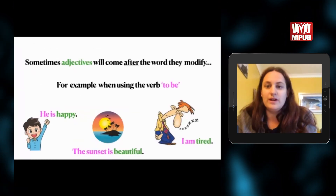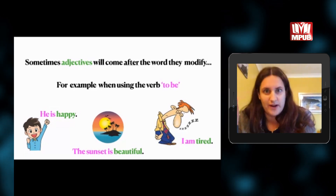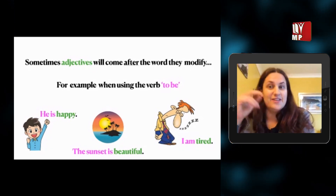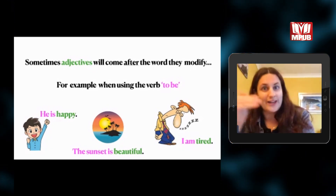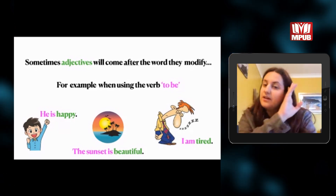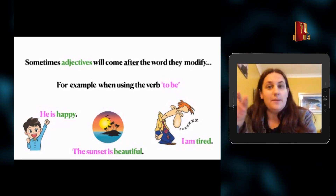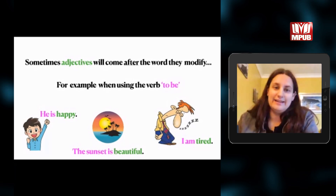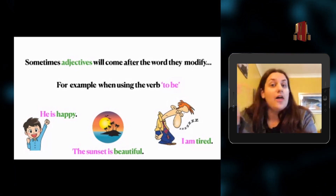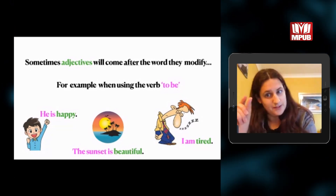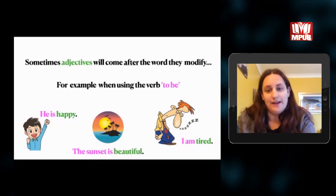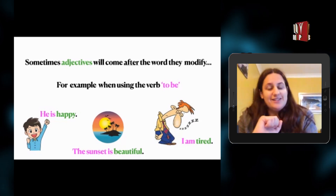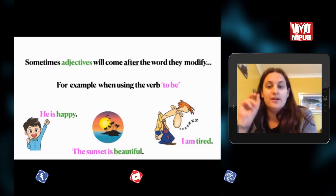Some adjectives come after the word they modify. For example, when we use the verb 'to be' — I am, you are, he is — the adjective comes after it. 'He is happy' — happy is the adjective. 'The sunset is beautiful' — the adjective describes the sunset. 'I am tired' — 'am' is the verb to be and 'tired' is the adjective. They all come after the verb to be.